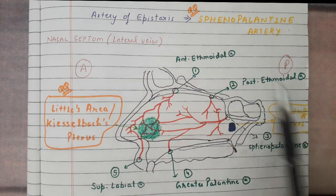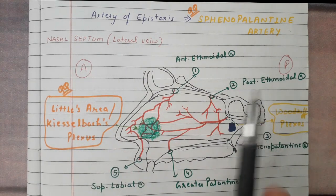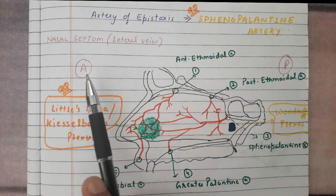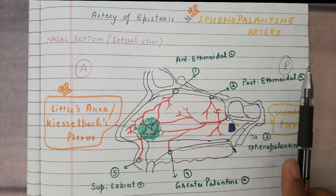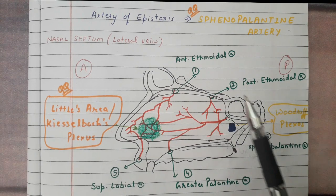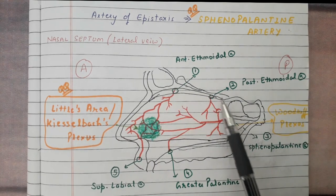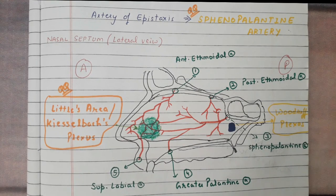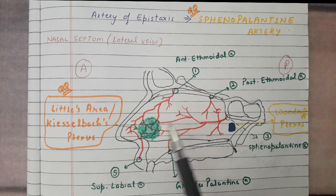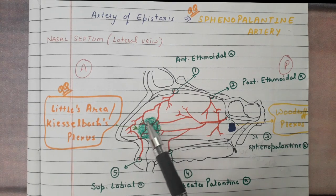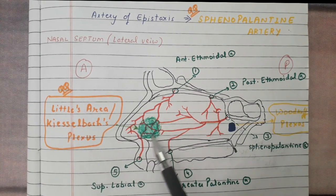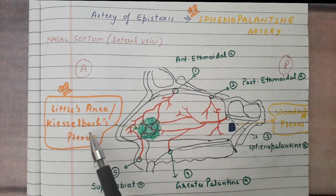Here is a diagram of the nasal septum in lateral view, showing the anterior and posterior parts. All the arteries — anterior ethmoidal, posterior ethmoidal, sphenopalatine, greater palatine, and superior labial — are shown diagrammatically. They all form an anastomosis in the green area, which is known as Little's area or Kiesselbach's plexus.